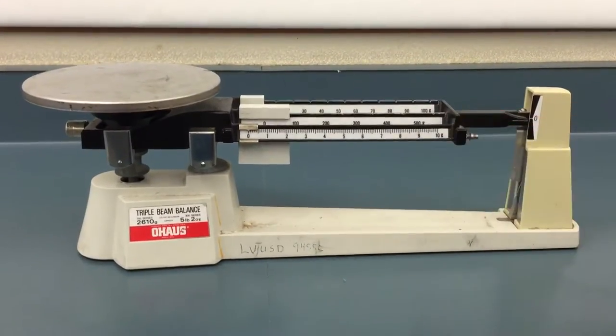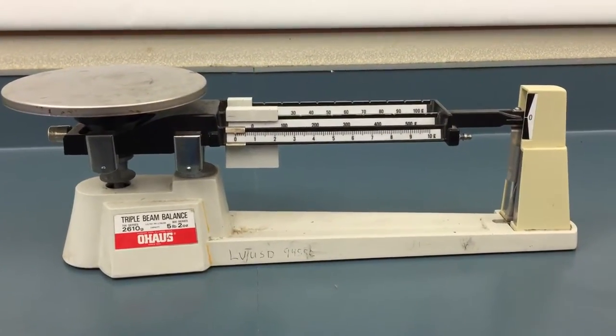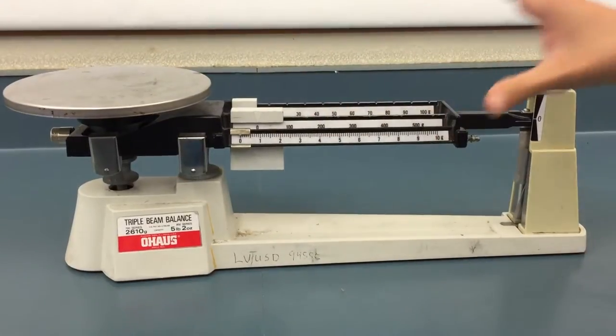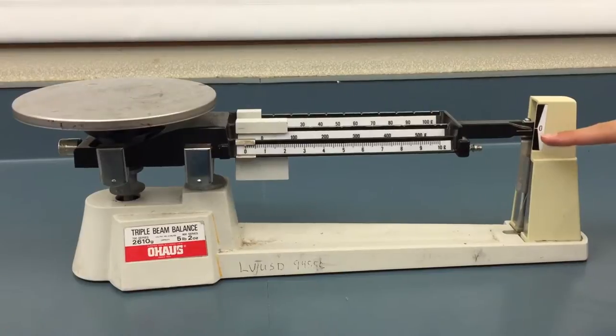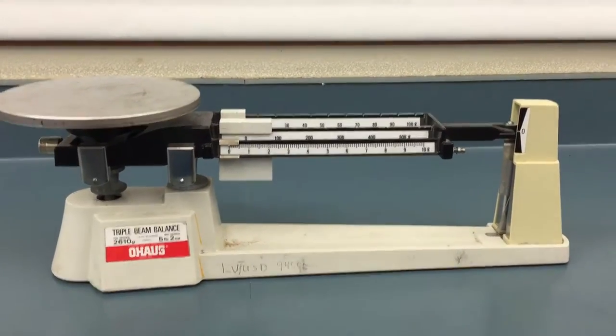So the first thing I'm going to do is make sure that your beam is calibrated. That means the weights are on the bottom, there's nothing on the stage, and the arrow is pointed fully to the zero. And mine's calibrated, as you can see.